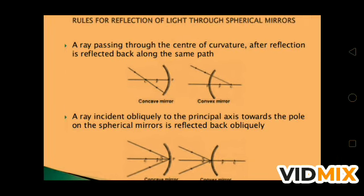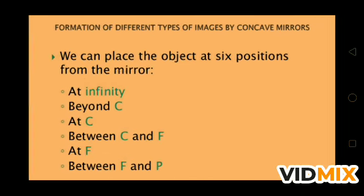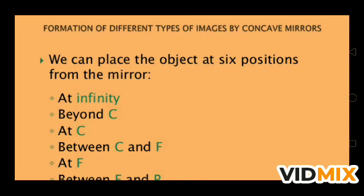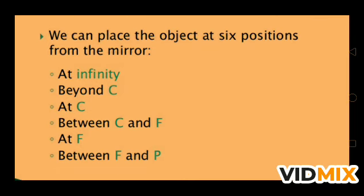Now, image formation by a concave mirror. There are six positions of the object: at infinity, beyond C, at C, between C and F, at F, and between F and P. You know C is the center of curvature and F is the focal point. For each position of the object we will see where the image is formed and its properties.